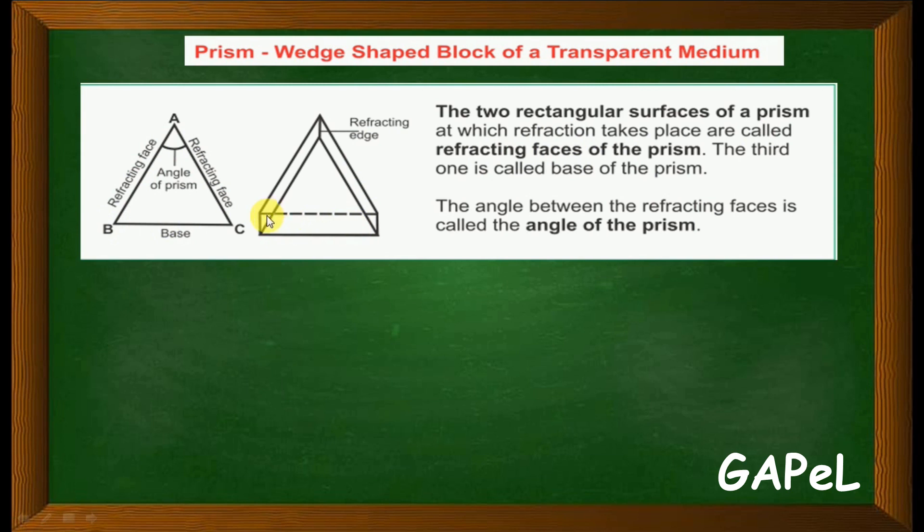This is the prism and this is the base. These are the reflecting faces. The angle between this reflecting face and this reflecting face is called the angle of the prism.